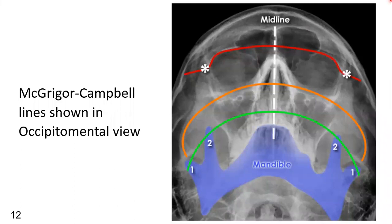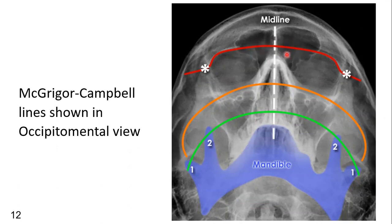The Campbell lines are now interpreted on this radiograph. Here you can see line one, line two, and line three. Any abnormality — such as a step deformity or fracture line — can be identified by following these lines. If there is a fracture in any of these areas, you will be able to interpret it by systematically tracing each line.